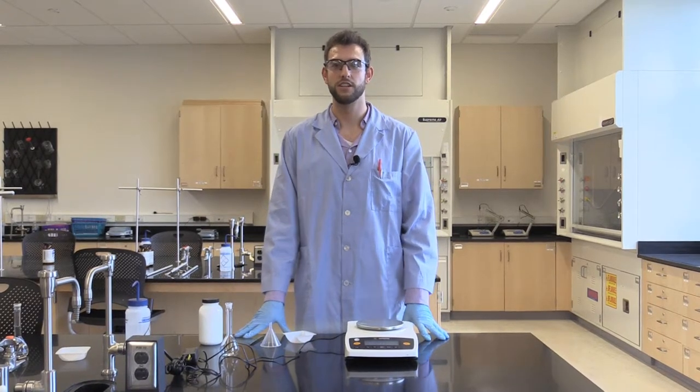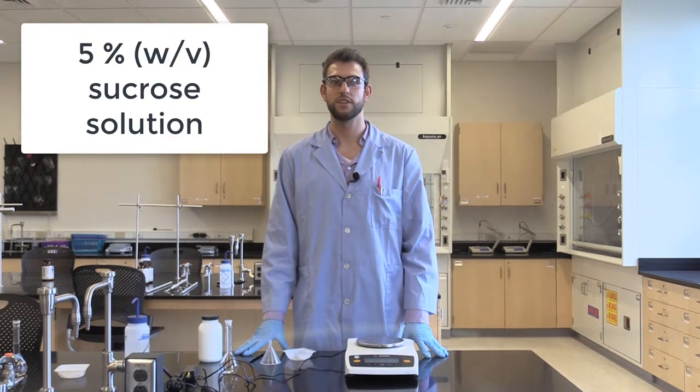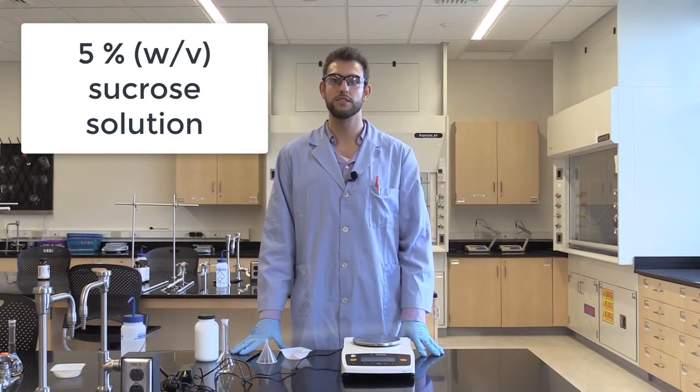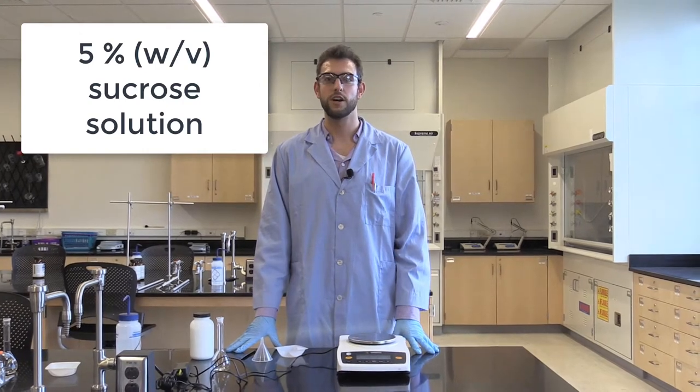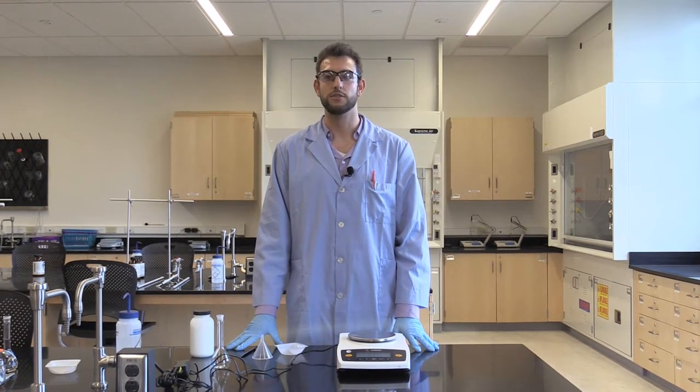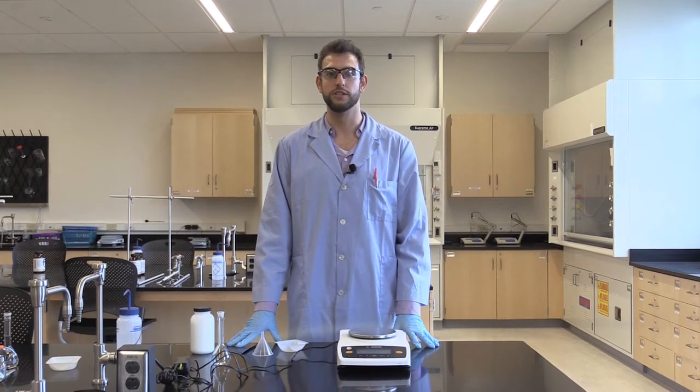Hi, my name is Dr. Scott Malidio, and in today's video I'll be showing you how to make a 5% weight per volume sucrose solution. What that means is I'll be weighing out 5 grams of sucrose and then dissolving it into a total volume of 100 milliliters.